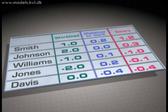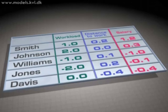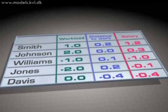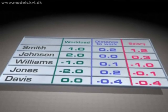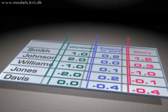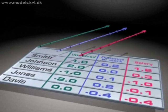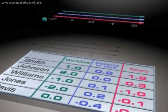And each have three variables measured. So for Smith, we have measured a workload of 1, a distance to work of 0.2, and a salary of 1.2.